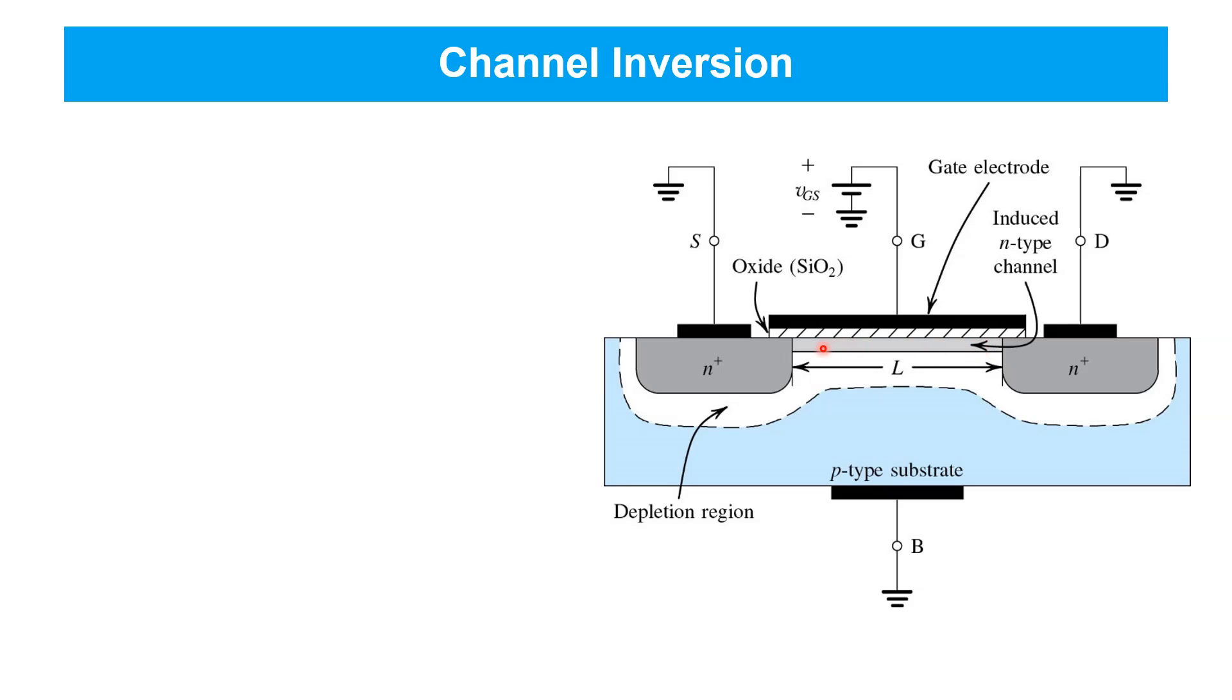In this state, the channel is said to be inverted because it's gone from being P-type to now being N-type. The source and drain regions are now connected by a conducting N-type channel, and current can flow between them. Thus, this type of device is called an N-channel MOSFET.